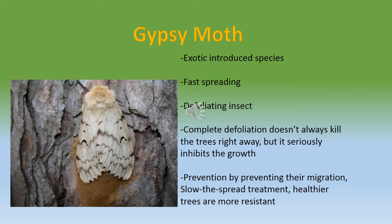Prevention for gypsy moths is basically the 'slow the spread' movement. Since they're so hard to get rid of, the best way to inhibit their spread is to kill them with insecticides and trap them before they get a chance to lay their eggs, and make sure trucks aren't carrying the eggs. There are gypsy moth traps, and also artificial barriers like corn and soy fields that can slow the spread.